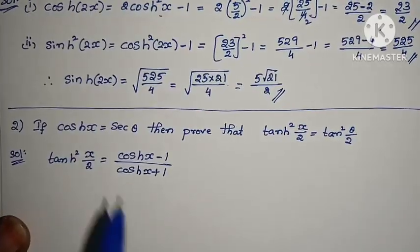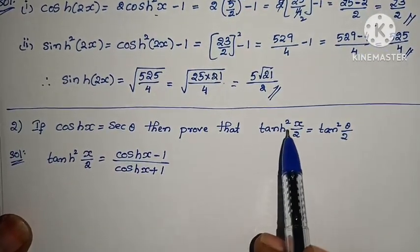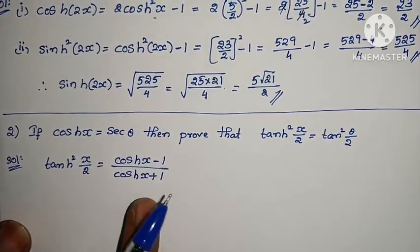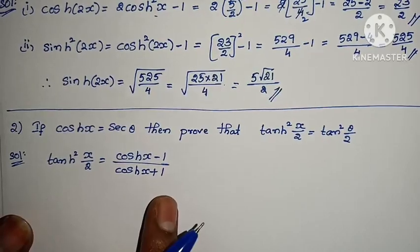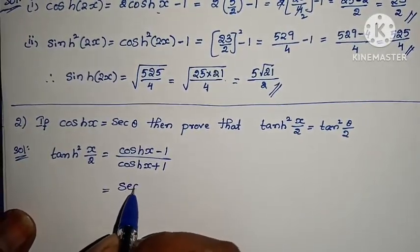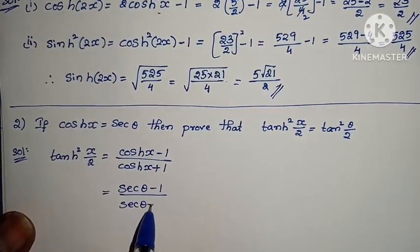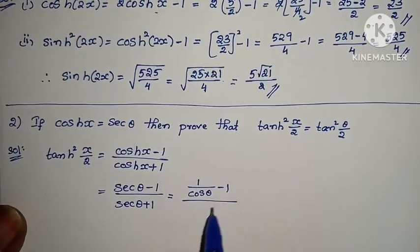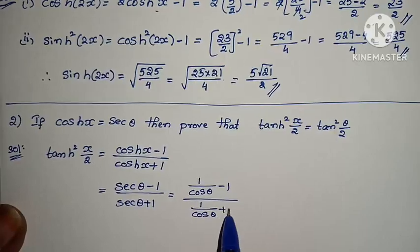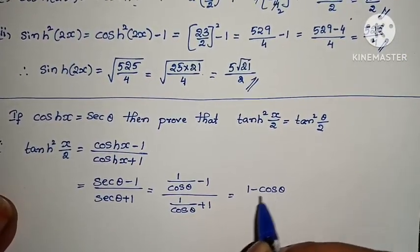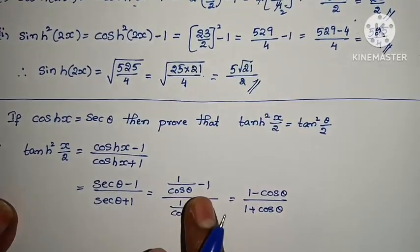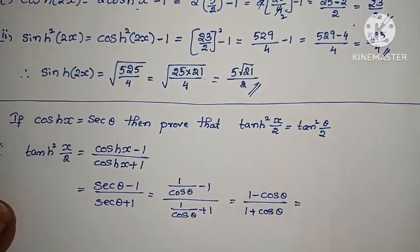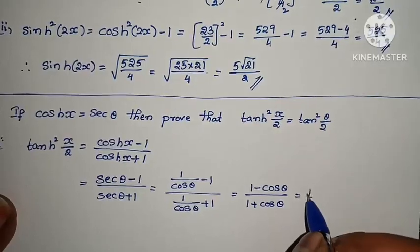Second question: If cosh(x) = sec(θ), prove that tanh²(x/2) = tan²(θ/2). We use the formula: tanh²(x/2) = (cosh(x) − 1)/(cosh(x) + 1). Substituting cosh(x) = sec(θ): this becomes (sec(θ) − 1)/(sec(θ) + 1) = (1/cosθ − 1)/(1/cosθ + 1). Taking LCM, this simplifies to (1 − cosθ)/(1 + cosθ).